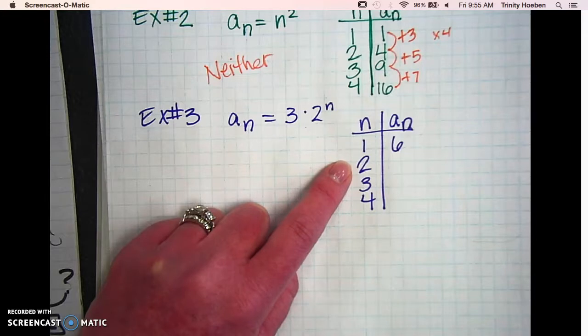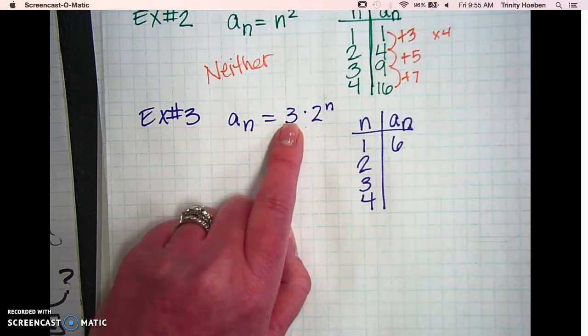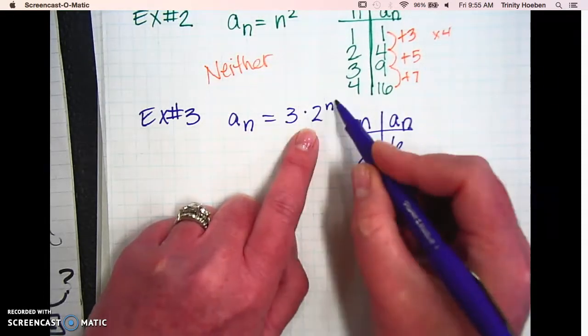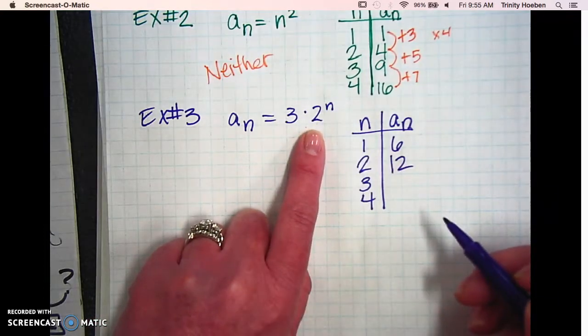All right, so now let's plug in a 2. 2 to the second power? 4. 4 times 3 is 12. Now let's plug in 3. 2 to the third power? 8. 8 times 3 is 24.